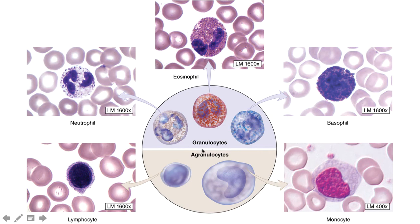The other two are agranulocytes — they don't have really prominent granules. So the first thing when you look at a slide and find white blood cells is to ask: are there obvious granules? If so, it's one of the three granulocytes; if not, likely one of the two agranulocytes. Within the granulocytes, the different colors of granules are very important. Basophils on the right tend to have very dark blue granules, whereas eosinophils at the top have very orange, almost reddish granules.